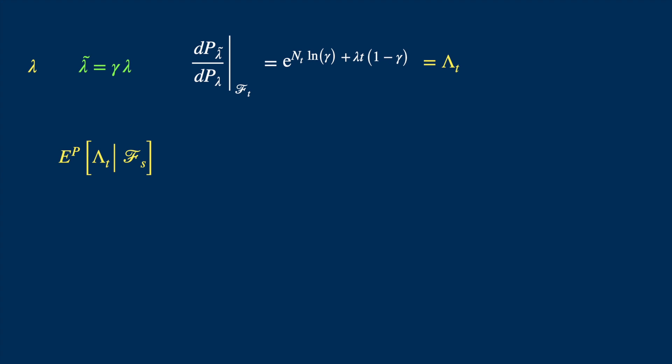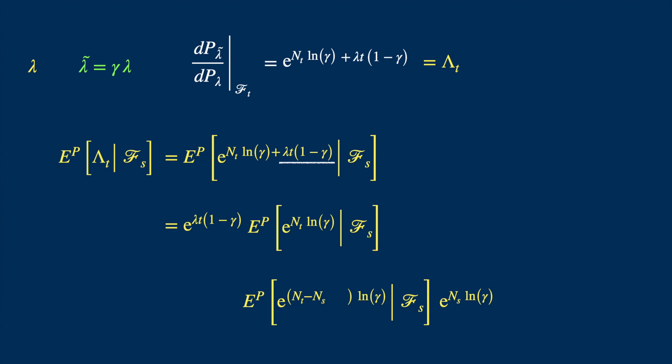We can substitute for lambda t. Now this term is deterministic, so we can take it out of the expectation, and the rest of the expectation stays. Now we add and subtract the value of n at time s. Now this n underscore s is known given the filtration at s, so we can take it out of the expectation, and we then have this exponential term at the front.